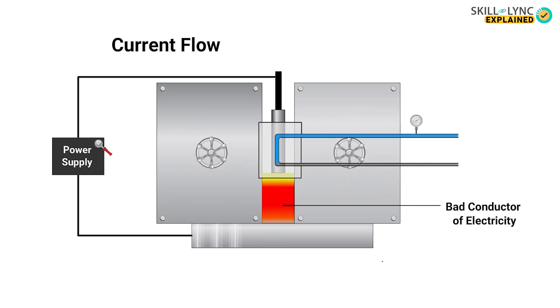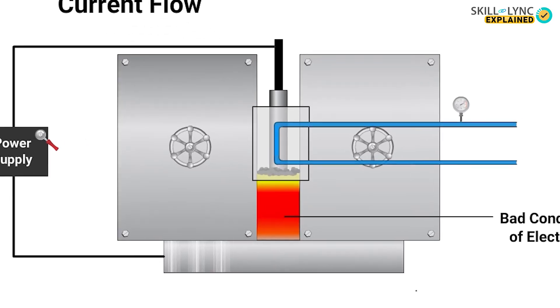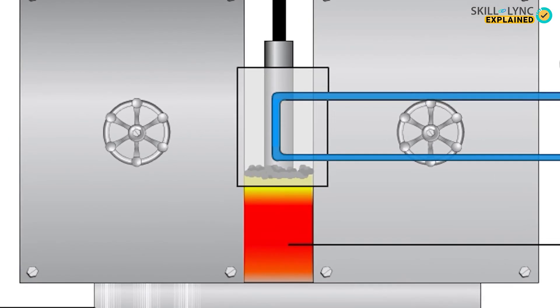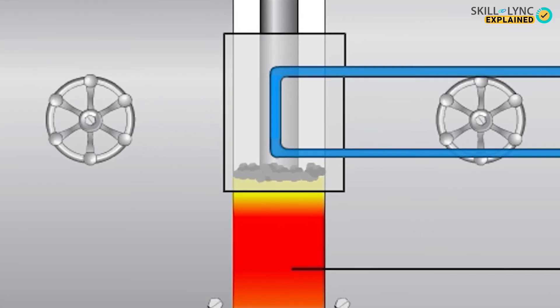The mold which is used to hold the entire weld pool is normally water cooled. Since the density of the slag material is much less than the molten electrode material, it stays on top of the weld pool. This aids in continuous generation of heat as well as protection of the weld pool from oxygen and other atmospheric elements.